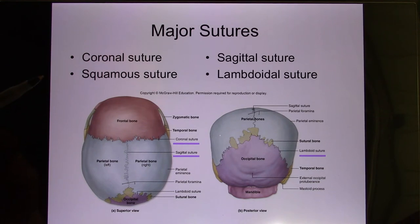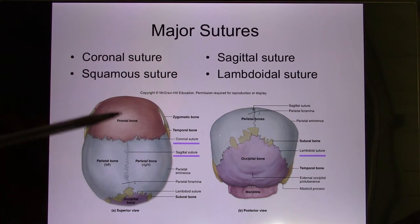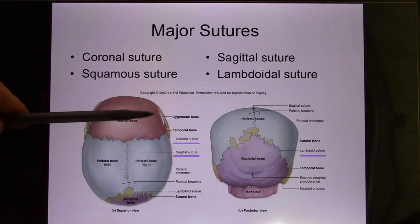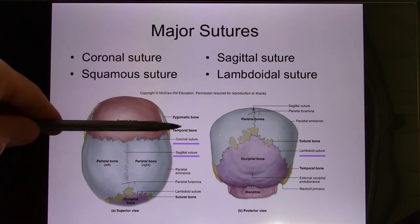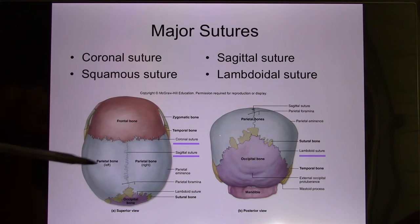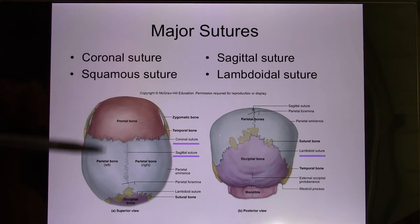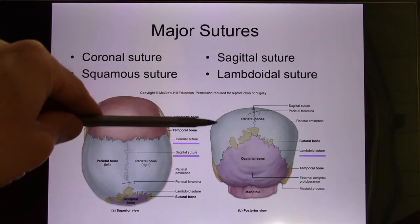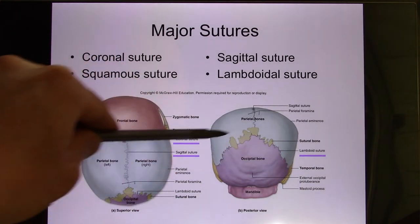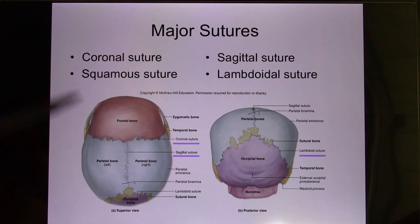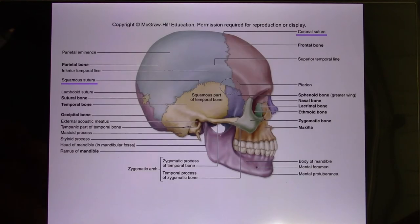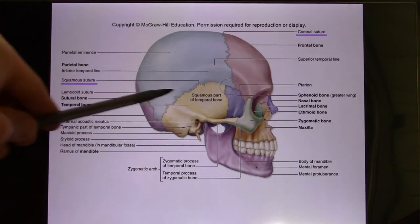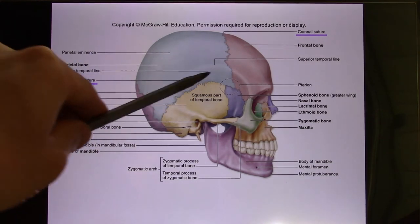Sutures glue the bones together. Between the frontal bone and parietal bone, it's called the coronal suture. Between the two parietal bones, it's called the sagittal suture. Between the parietal and occipital, it's called the lambdoid suture. And the temporal bone connects with the parietal bone via the squamous suture.